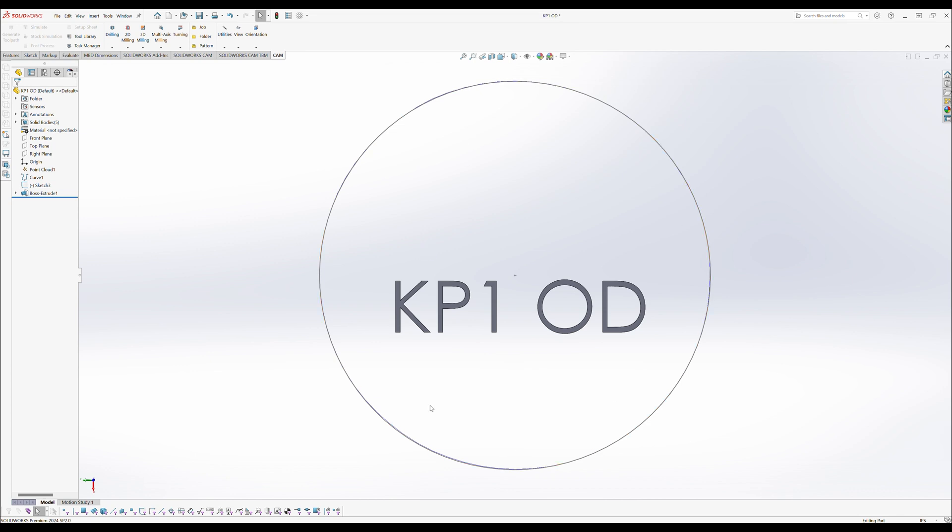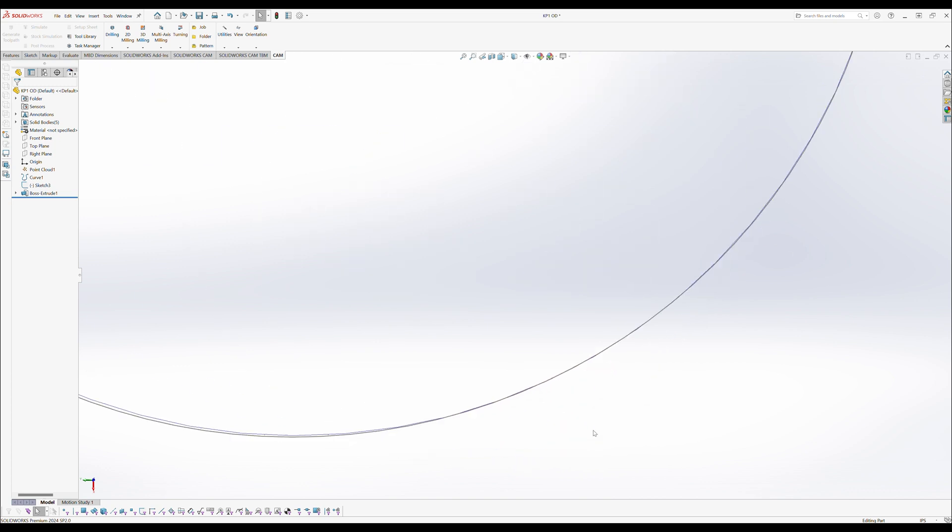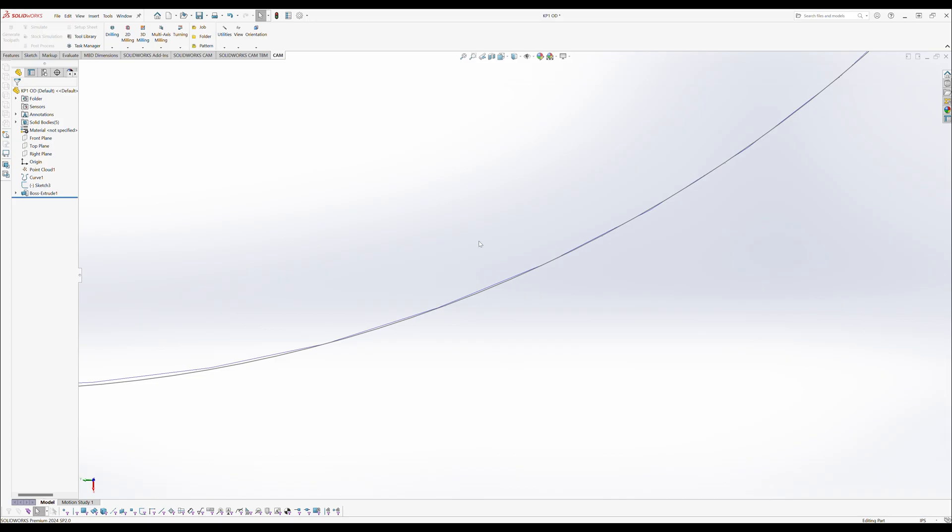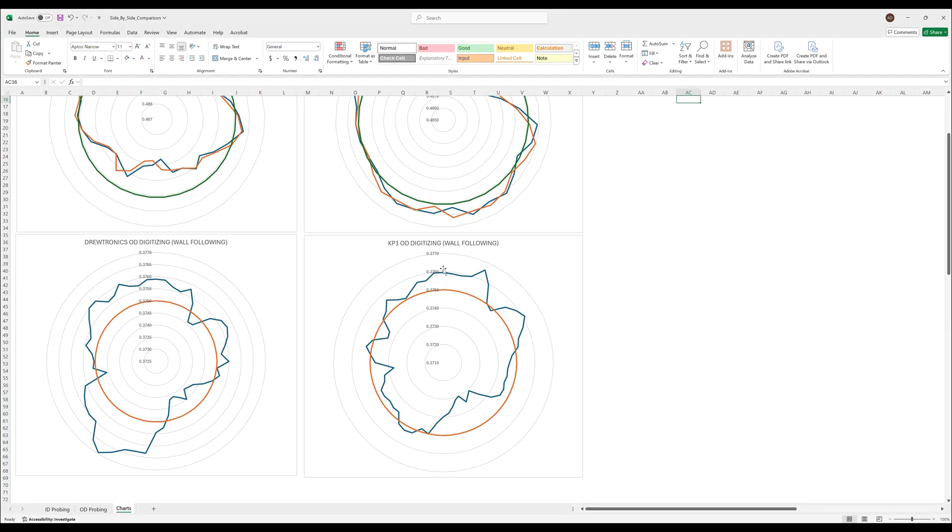But if we look at the KP1 OD and we take a look at this area we should see the hits actually inside the theoretical perfect circle sort of on the bottom right just right of the center line and when we zoom in right here we do in fact see that. We see that the hits are actually inside that perfect circle and we can also see like that. Let's take a look at the top dead center of the KP1 digitizing. You go over take a look right here we can see that the actual hits are outside the perfect circle the same way they are in the plot.